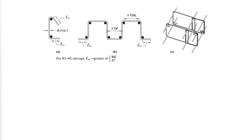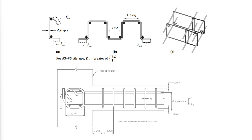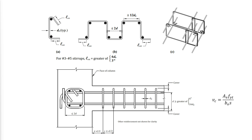The shear strength of two-way slabs can be increased by providing shear reinforcement consisting of properly anchored single or multiple-legged stirrups. Stirrups are permitted to be used provided that d is greater than or equal to 6 inches or 16 times the diameter of the stirrup. To calculate the extra shear strength gained by the steel reinforcement, the following equation is used.